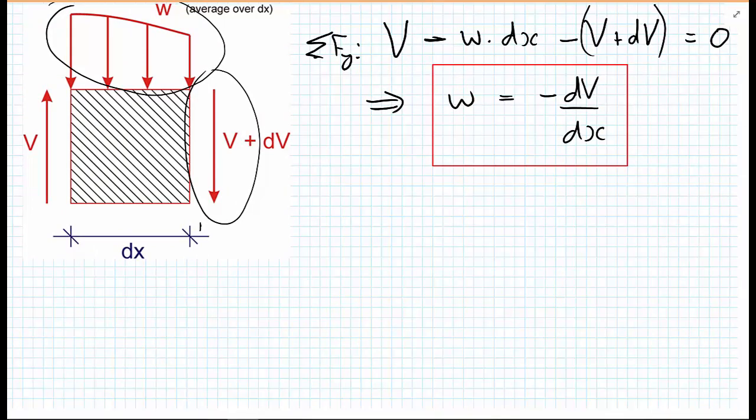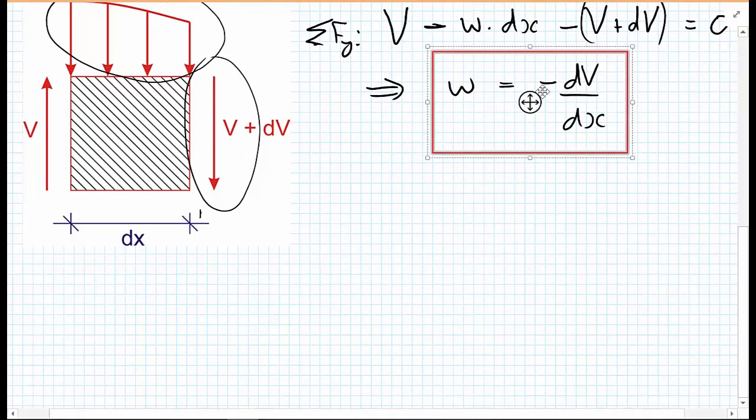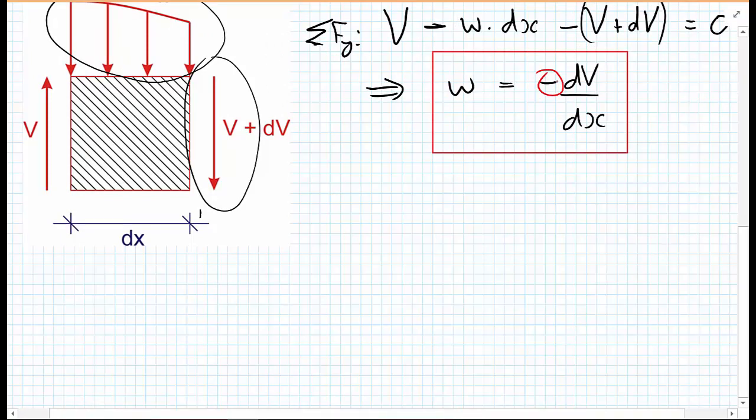And we're going to move a little bit further with this. First, before I move on, this minus sign, important to note, this minus sign occurs because the loading points downwards. If we chose different sign conventions, this might come out as positive. But for the sign convention we're choosing, we get negative because the load w is pointing downwards.